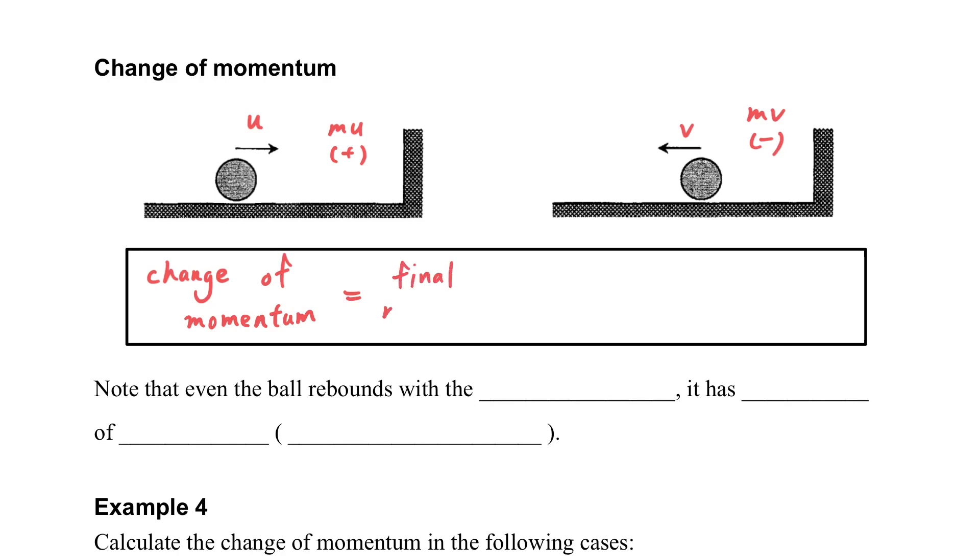The change of momentum is defined by the final momentum minus the initial momentum. Please note that every time when we consider the change of momentum it must be final momentum minus the initial. If we rewrite it in a short form, we will use mv minus mu to represent it.